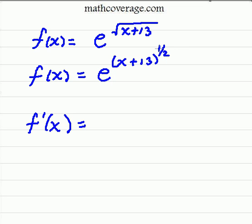So we take one-half and we bring it out front, rewriting x plus 13, and subtracting one from one-half, and that gives us negative one-half.